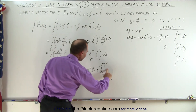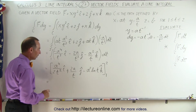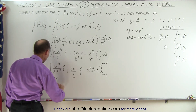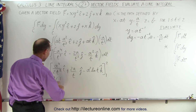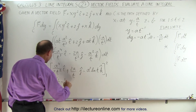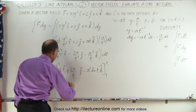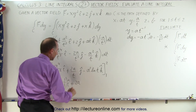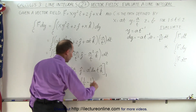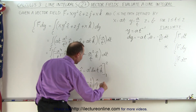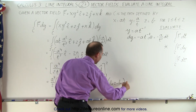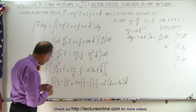Now let's evaluate. Plugging in the upper limit then the lower limit: for the i term we get a to the fourth over 2 times (1 over 4 minus 1 over 1); for the j term we get plus 2a times (1 over 2 minus 1 over 1); and finally minus a squared times (the natural log of 2 minus the natural log of 1). Then we simplify things a little bit.